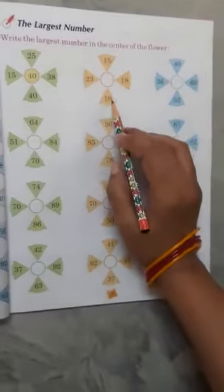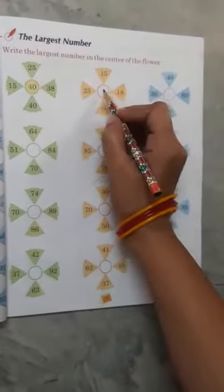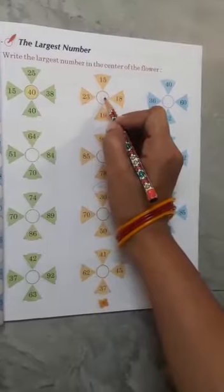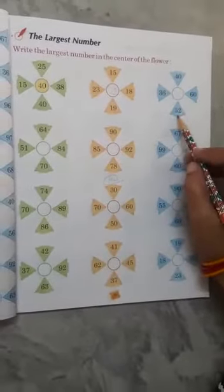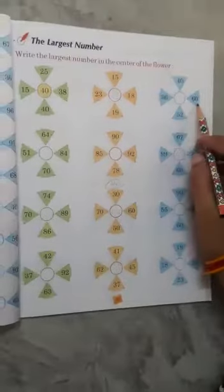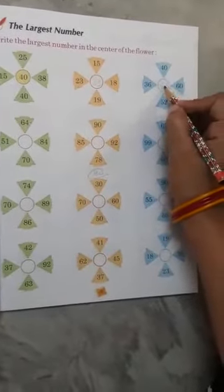This flower is made, you have to write in its circle. 40, 60, 52, 36 - which is the biggest number? Largest number is 60. 64, 51, 84, 70 - 84. You will write 84.